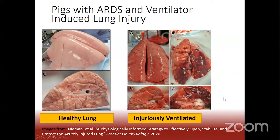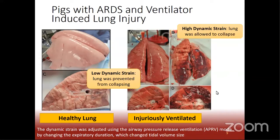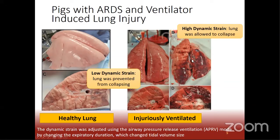You don't need to be a clinician to look at lung B and D and think you wouldn't want your lung to look like that. One key difference between how these two lungs were ventilated is the degree of tissue strain. With low dynamic strain, the lung was prevented from repetitively collapsing and overstretching. But in the high dynamic strain lung, you see sections that were truly blown out — the darker the red, the more blood and other material that entered that region.